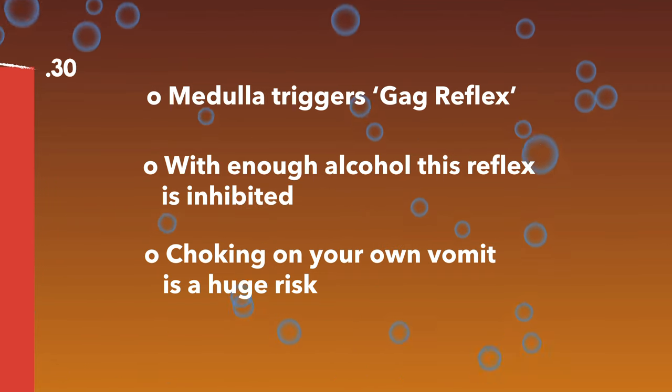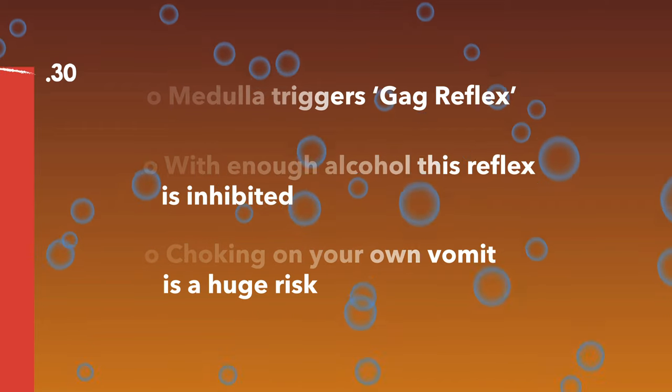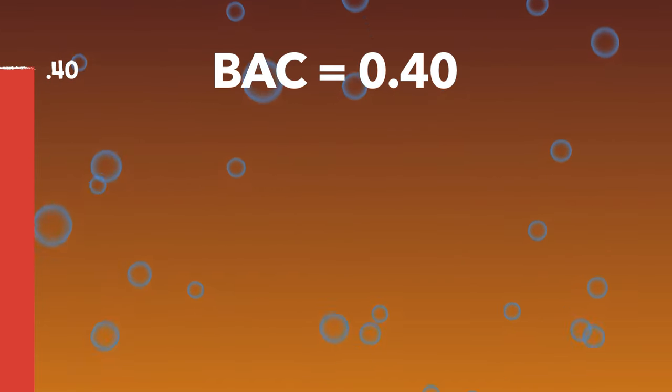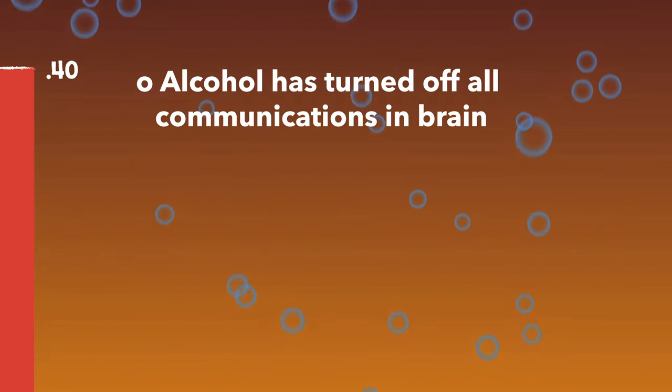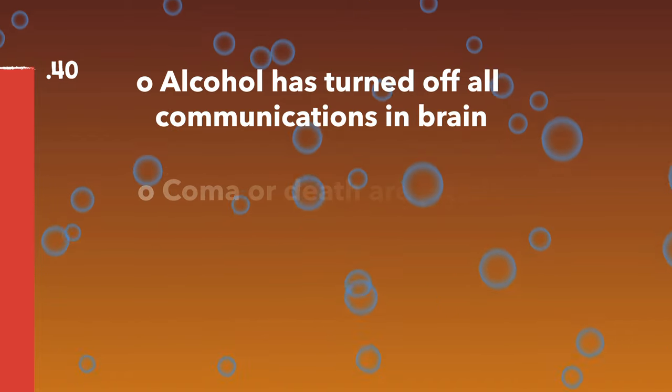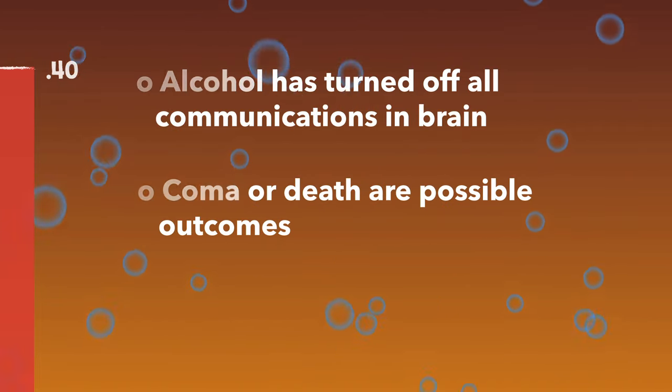Bladder function is also impaired, so loss of bladder control is not out of the question. The alcohol has turned off all communication pathways in your brain. The onset of a coma and possible death due to respiratory arrest are possible outcomes.